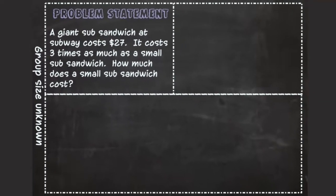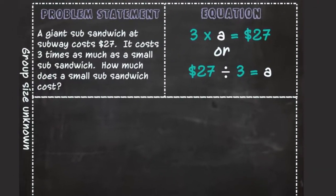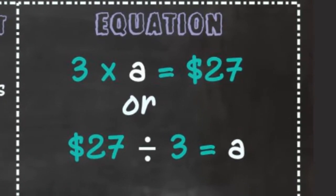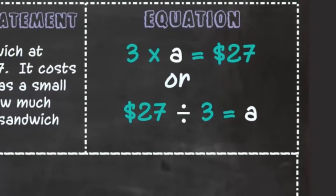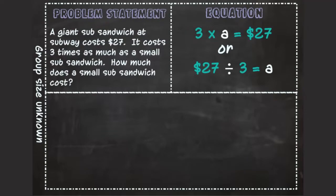First, write an equation to represent the problem statement: 3 times a equals $27, or $27 divided by 3 equals a. In this equation, the first factor is the number of groups, the second factor is the number in each group, which is unknown at this time.